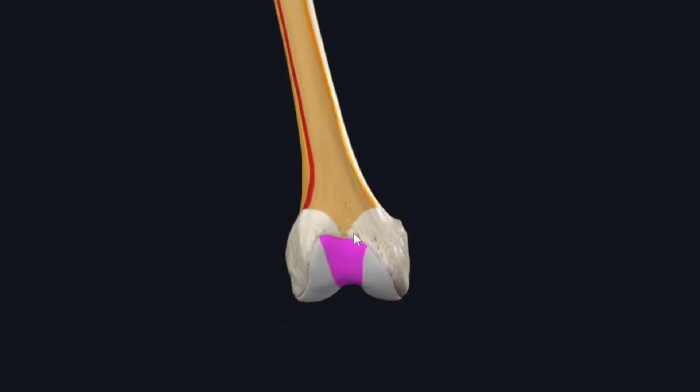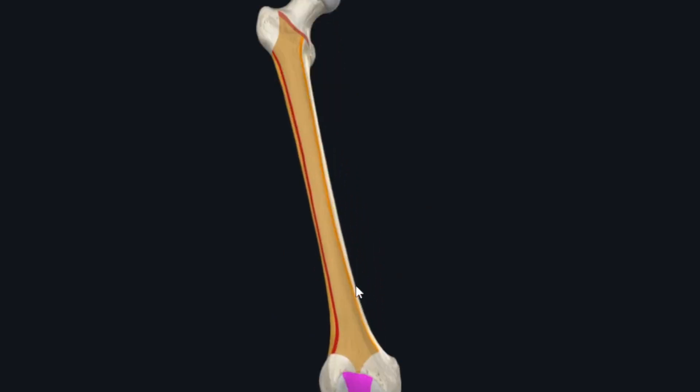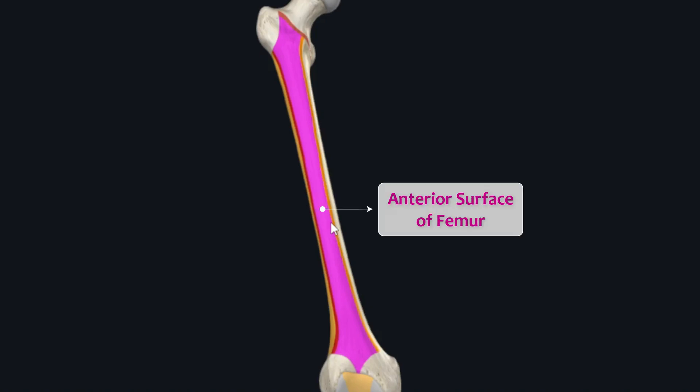The whole smooth area on the frontal aspect of the body of the femur is called the anterior surface of the femur, and it is one of the five surfaces of the body. The other four are the lateral, medial, posterior, and popliteal surfaces.